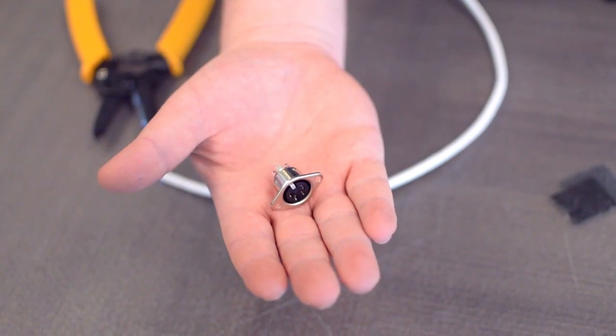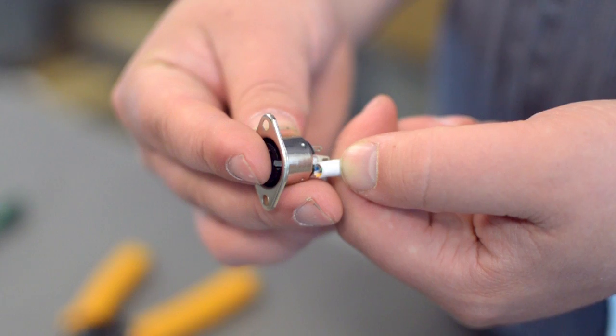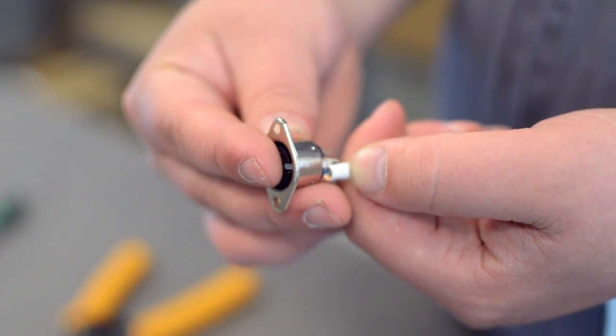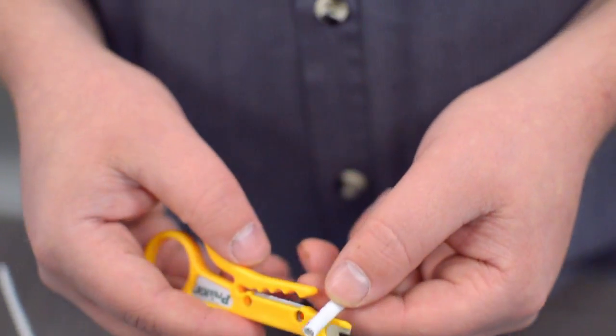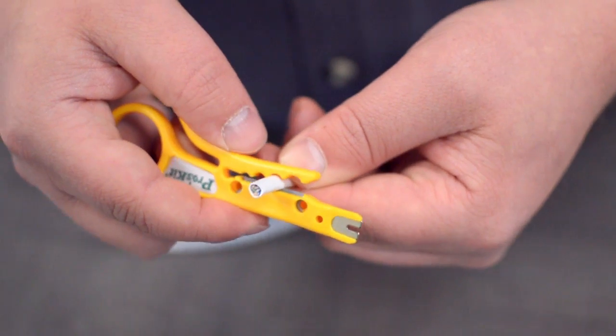Measure how far you will need to strip back the jacket by holding the cable up against the base of the connector. Then, strip the cable jacket using the wire strippers.